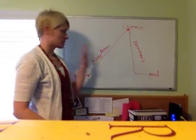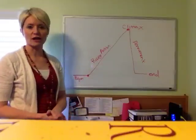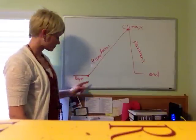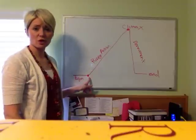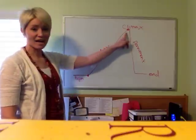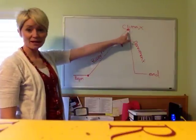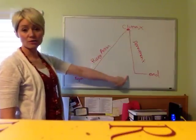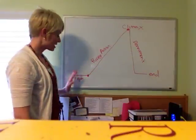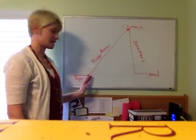This right here is what's called the Freytag's Triangle. We have the beginning. The beginning leads up to what's called an inciting incident. The inciting incident is the beginning of the rising action that leads to the climax. Then you have your denouement, or resolution, and then the end of your story.